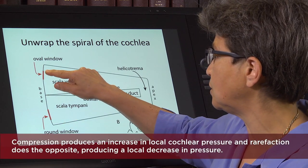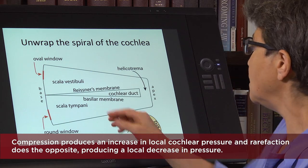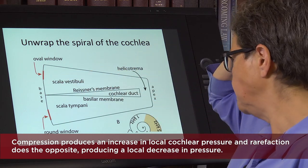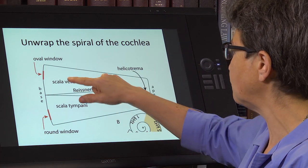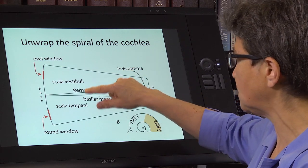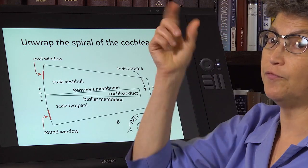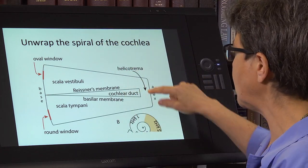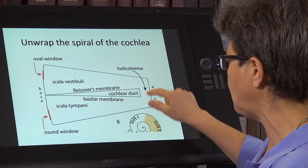This is called compression, and outward going is called rarefaction. So there's going to be a fluid wave that comes through the length of the cochlea. There is a connection between the scala vestibuli and the scala tympani that's up at the very top of the bony cochlea. And this is called the helicotrema. It's right next to the apex. So this is a continuous amount of fluid.